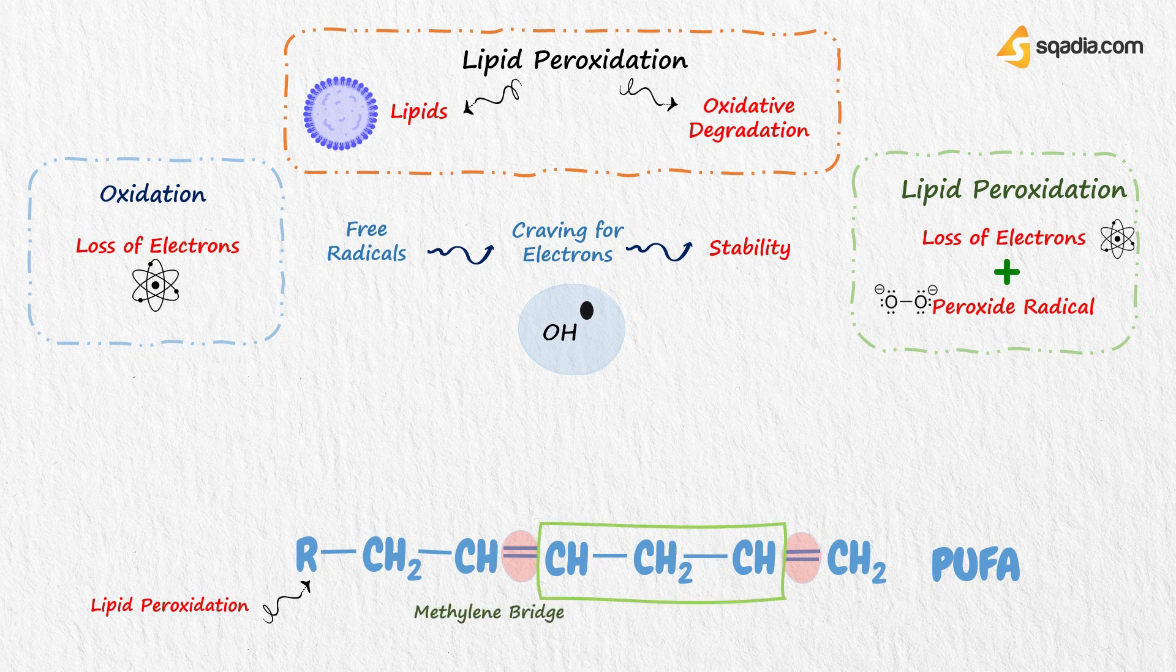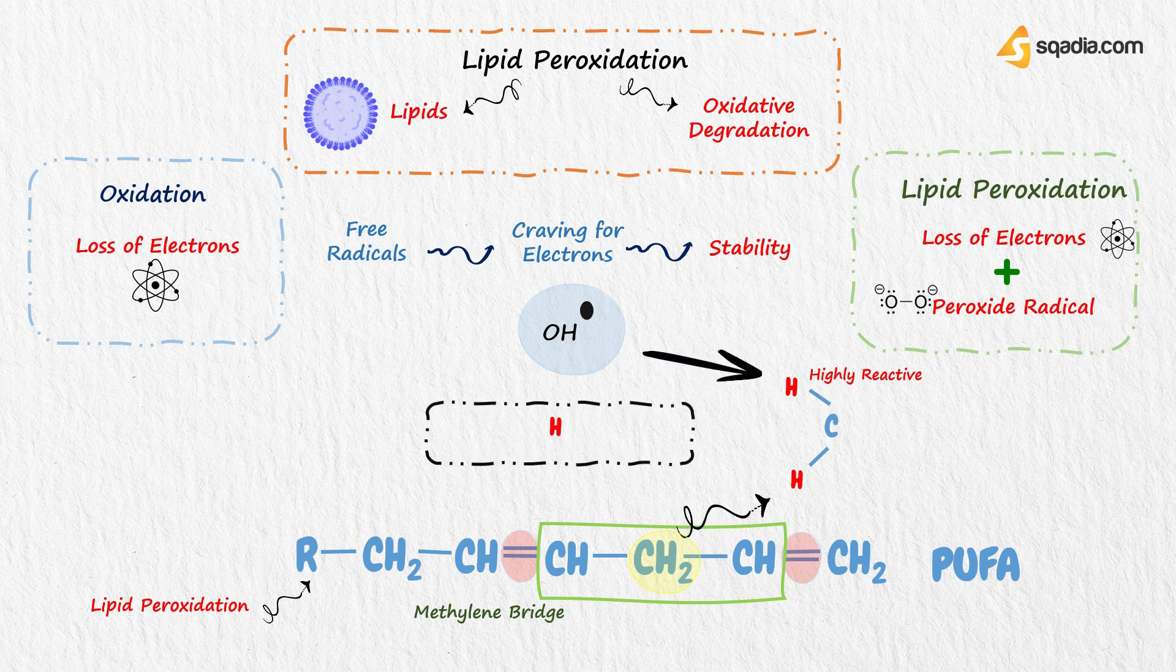Because it has a methylene bridge, methylene has two hydrogens that are highly reactive. Free radical attacks on it. One hydrogen is released, so it shares its electron with OH, and a water molecule will be formed. It means an electron is lost from the lipid. Thus, more free radicals are generated.